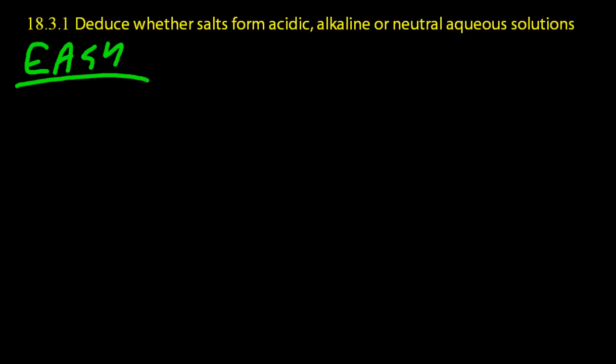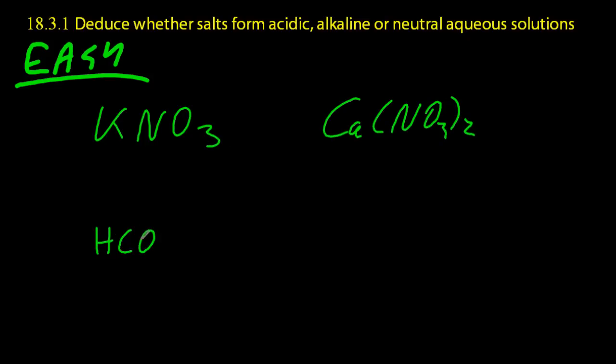So I'm going to write down four salts. And when you see the salts, you have to decide how they could be made. What combination of acid and base would make these salts? And once you've decided that, it's quite easy to work out if the pH is acidic, basic, or neutral.